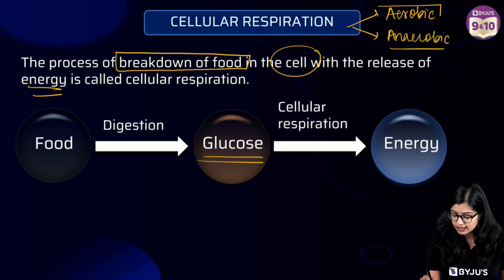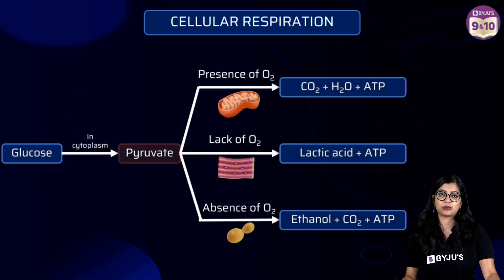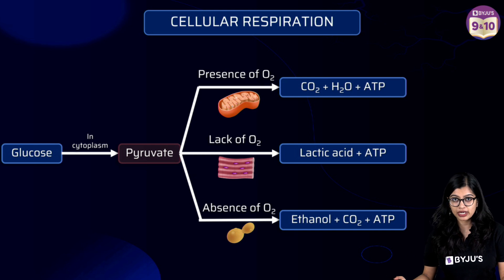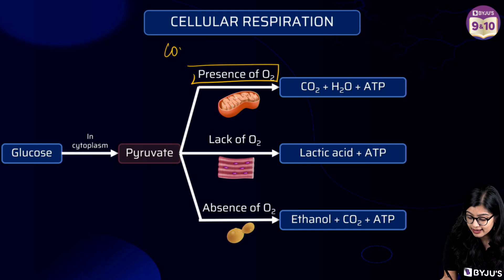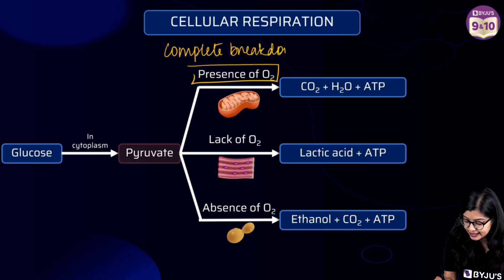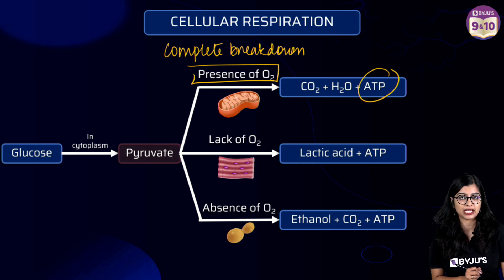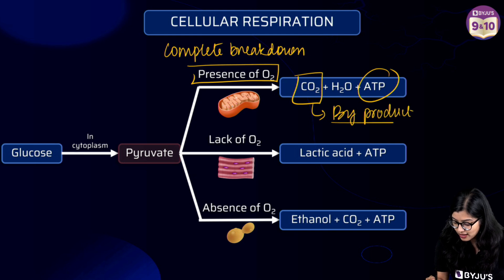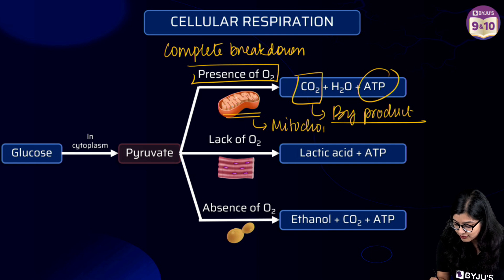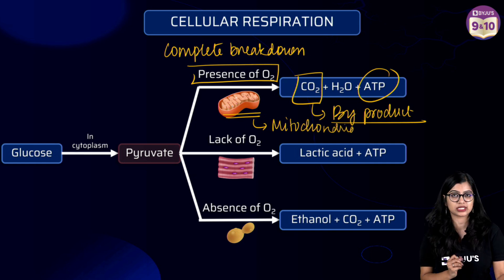In this video we will focus more on aerobic respiration. Aerobic respiration is a process which takes place in the presence of oxygen, where there is complete breakdown of glucose to release energy in the form of ATP, and carbon dioxide is given out as a by-product. Within the cell, the organelle called mitochondria is actively involved in this process.